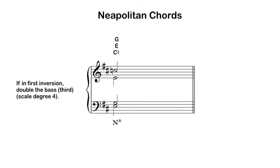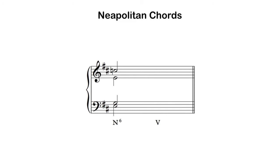Now that we have the chord spelled, we need to resolve it. Neapolitan chords are predominant chords, which means they resolve to some sort of dominant chord — whether a dominant triad or a dominant seventh. Since I'm going to a dominant chord, I'm going to a chord with a root of F sharp. Spelling up from there: A sharp — remember to raise that leading tone in the minor mode — and C sharp as the fifth. I'll start by writing the bass line: scale degree 4, the bass of the Neapolitan, typically steps up to scale degree 5, the root and bass of the dominant chord.